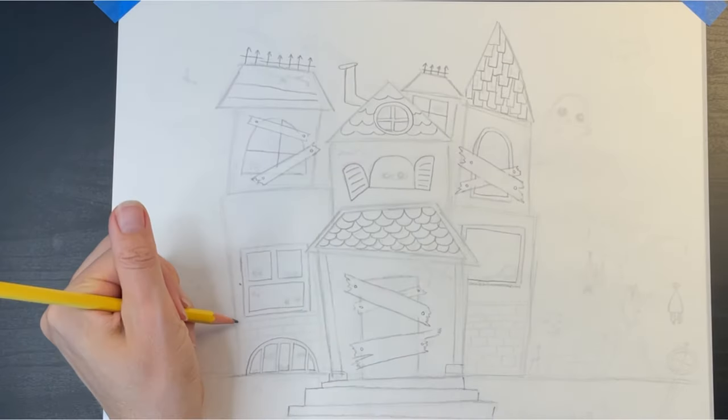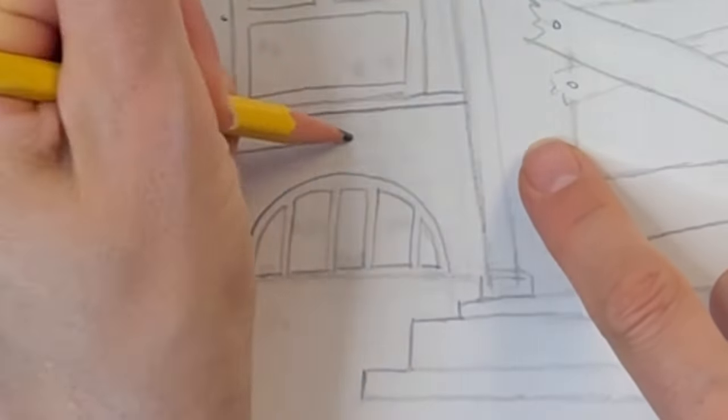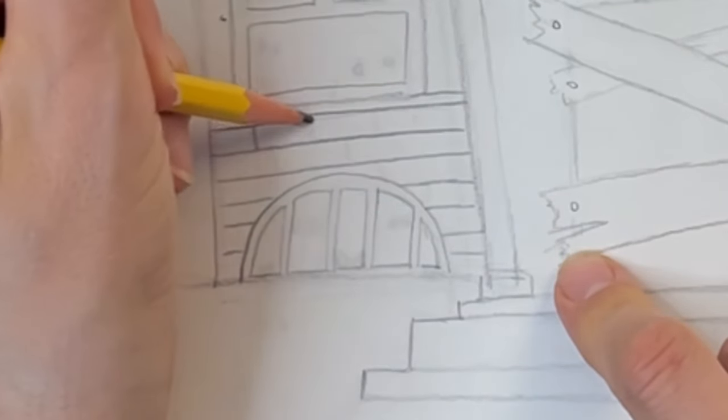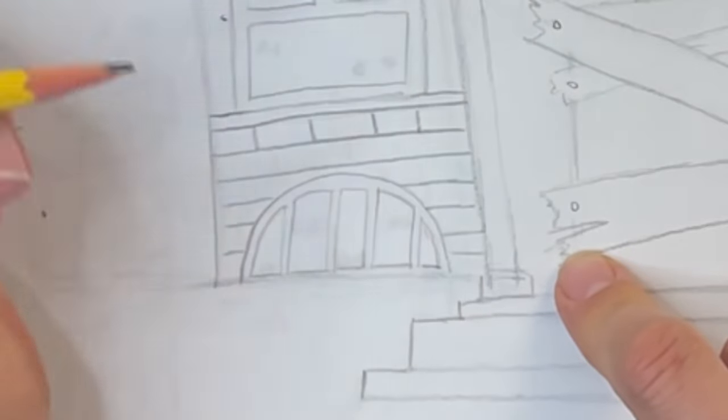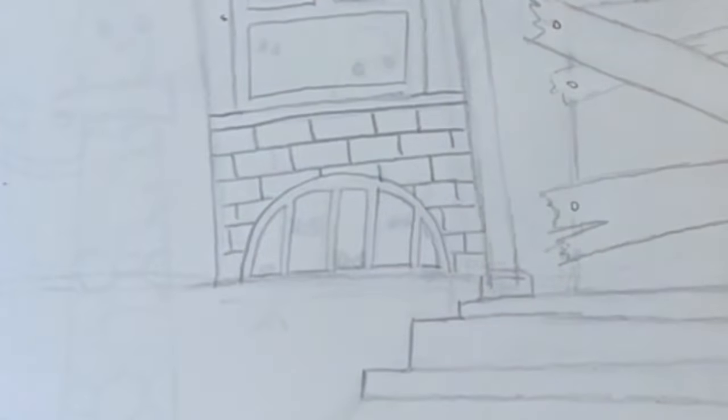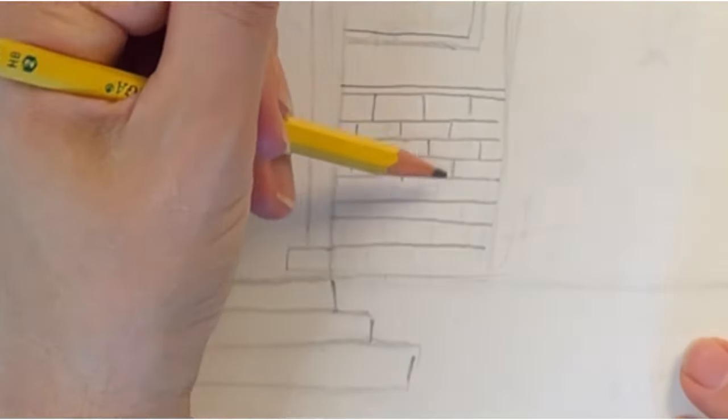I thought it would be fun to add some brickwork on the bottom of my house. I'm drawing several rows of straight lines then I'm adding several vertical lines along each row. Then I'm repeating this on the right side.